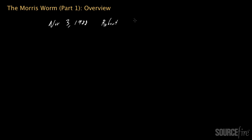On the evening of November 3rd, 1988, approximately 25 years ago, a graduate student at Cornell University named Robert T. Morris Jr. executed a computer program that inadvertently caused a level of destruction across the internet that would ultimately make it one of the most historic events in the field of cybersecurity.